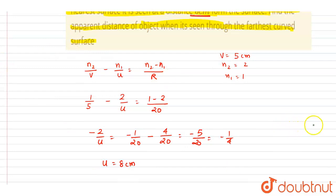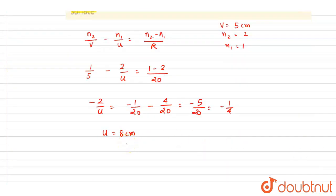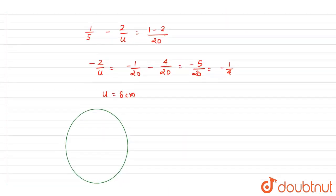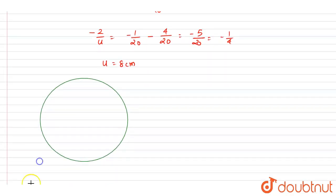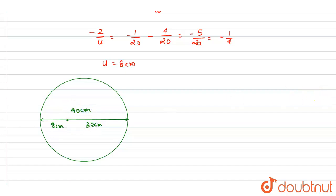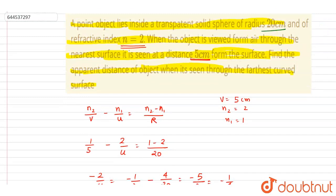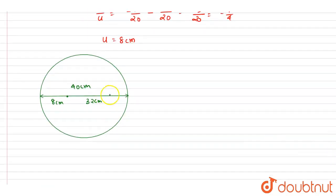Now that we have the object distance from one surface, we use the geometry of the sphere. The radius is 20 centimeter, so the diameter is 40 centimeter. The object is at a distance of 8 centimeter from one surface, so it will be at a distance of 40 minus 8, that is 32 centimeter from the other surface, since the total distance is 40 centimeter.